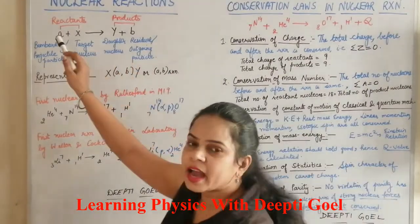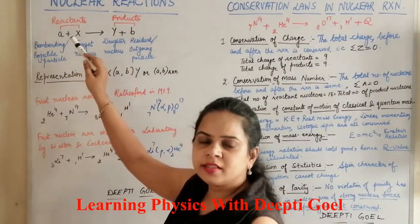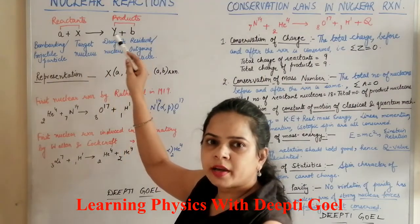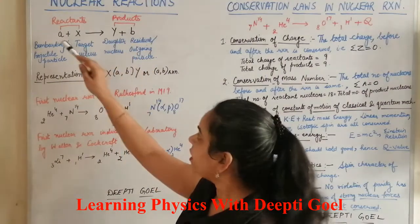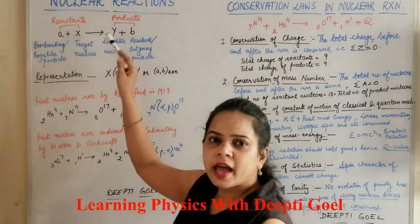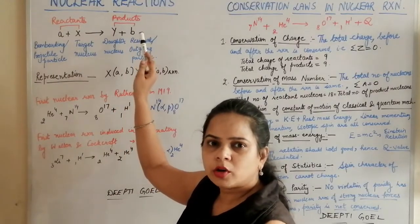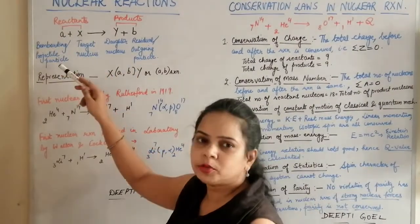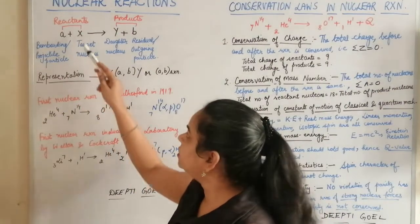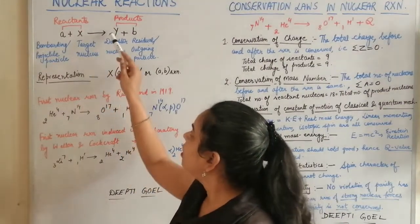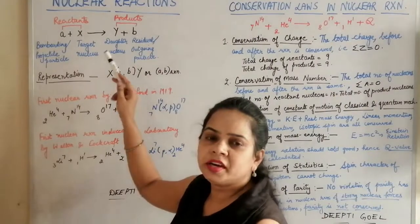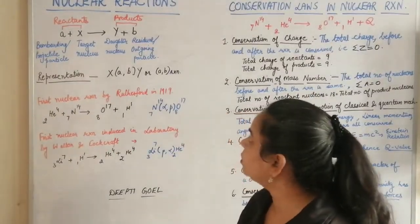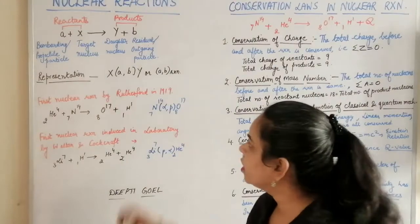Let us consider this reaction: A plus X reacts to form Y plus B. Here A and X are the reactants and Y and B are the products. A is called the bombarding or projectile particle, X is called the target nucleus, Y is called the daughter nucleus, and B is called the residual or outgoing particle.